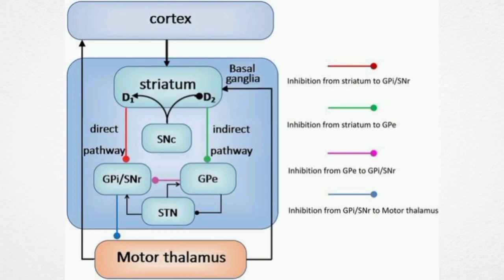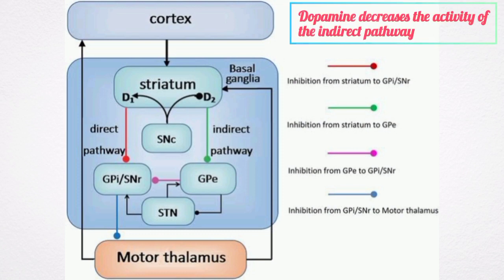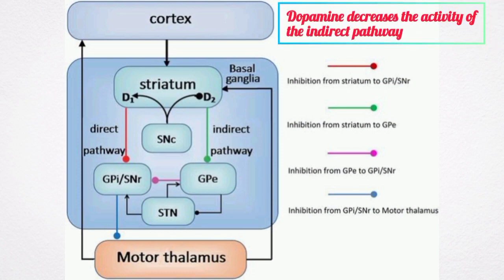In contrast, cells of the indirect pathway have D2 dopamine receptors. When dopamine binds to these receptors, it inhibits the neuron, making it less likely to fire. Dopamine therefore decreases the activity of the indirect pathway.